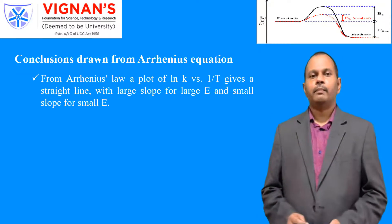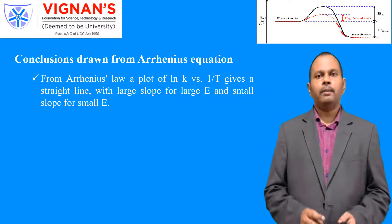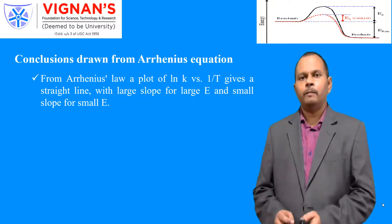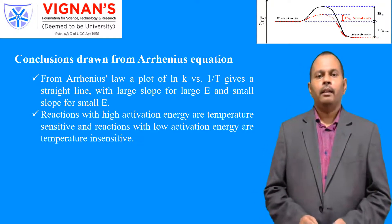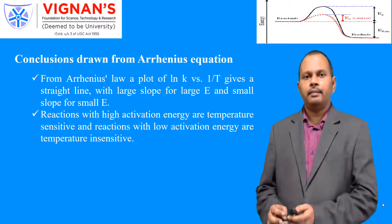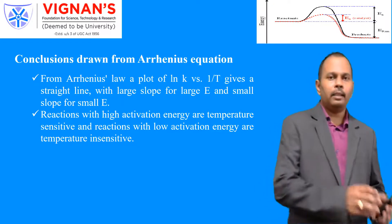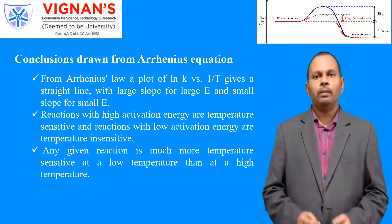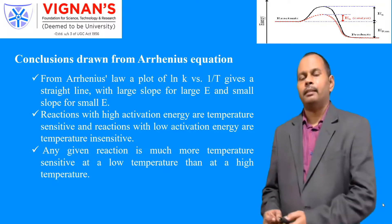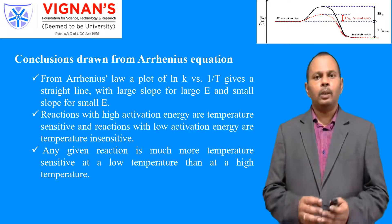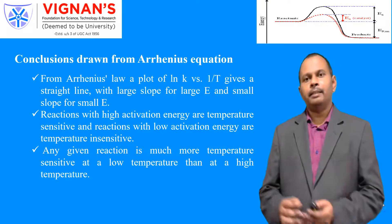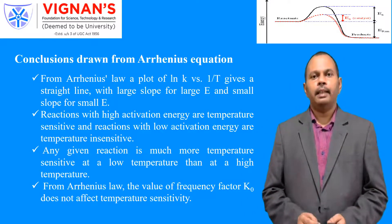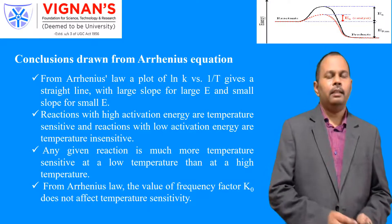Conclusions drawn from Arrhenius equation: A plot of ln K versus 1/T gives a straight line — with large slope for large activation energy E and small slope for small E. Reactions with high activation energy are temperature sensitive, and reactions with low activation energy are temperature insensitive. Any given reaction is much more temperature sensitive at low temperature than at high temperature. From Arrhenius's law, the frequency factor K₀ does not affect the temperature sensitivity of reactions.